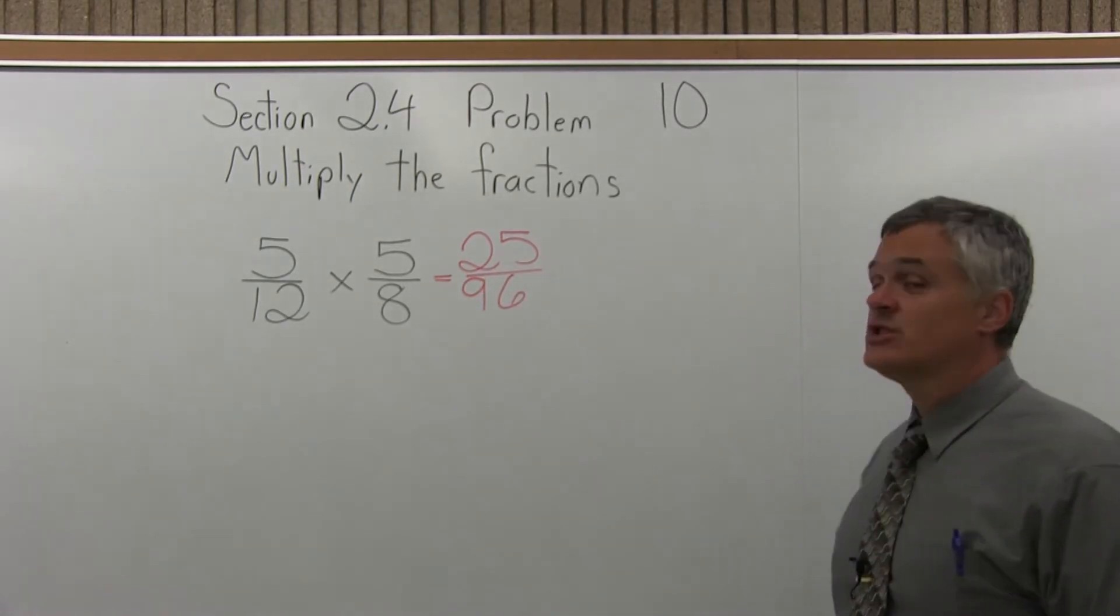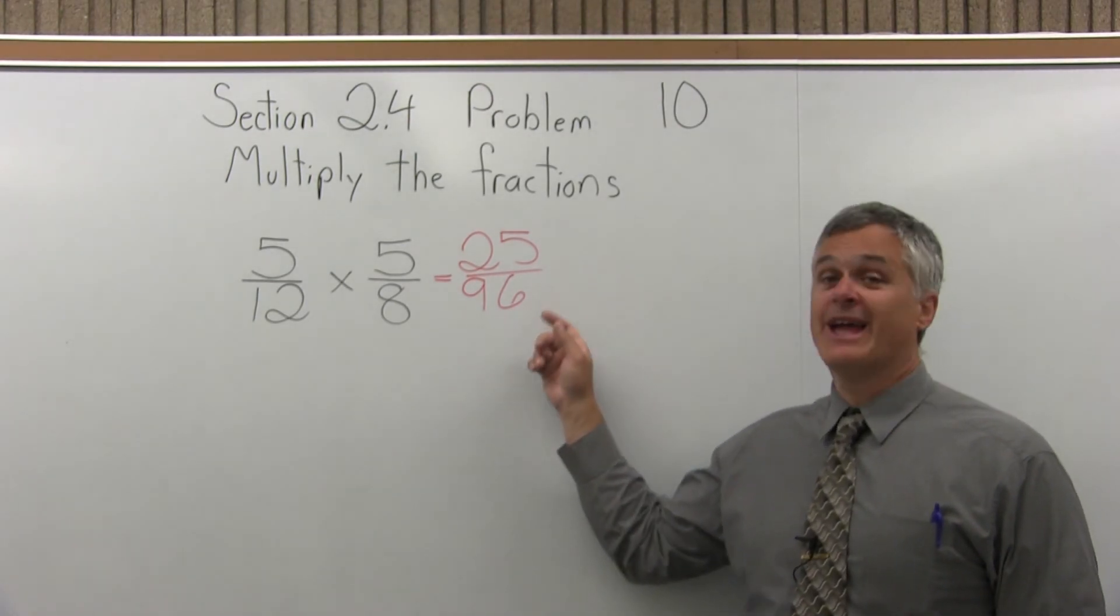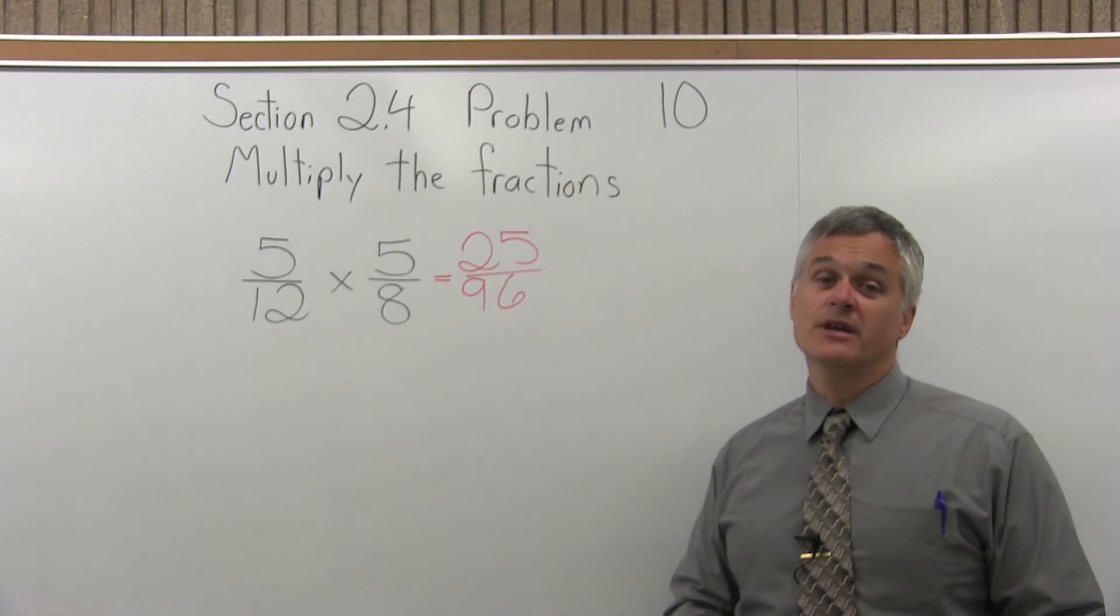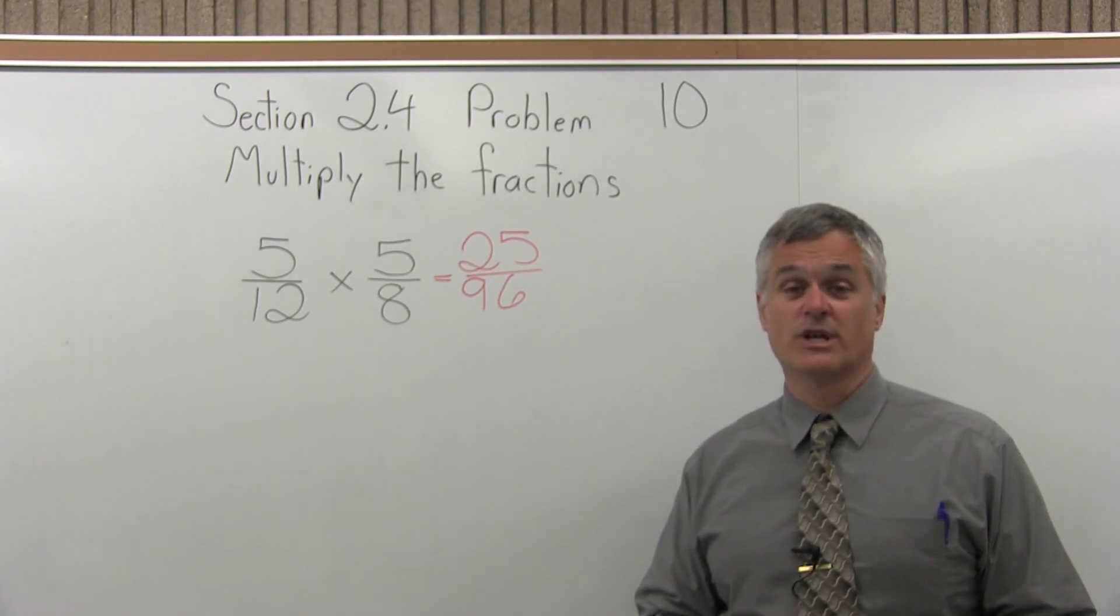And then you want to check to see if your answer can be reduced. Are there any numbers that will divide into both 25 and 96 evenly? And the answer is no, there are not. So the final answer is 25 over 96.